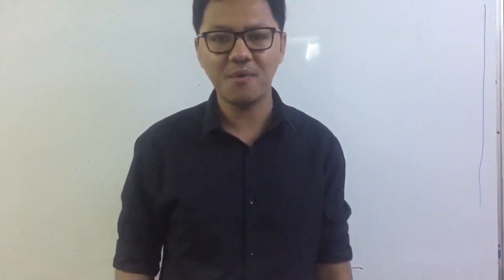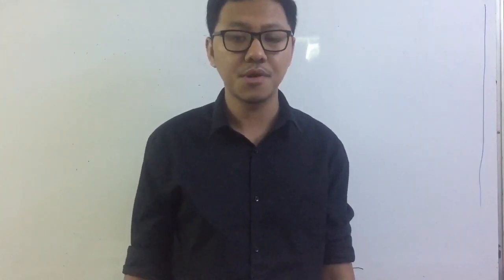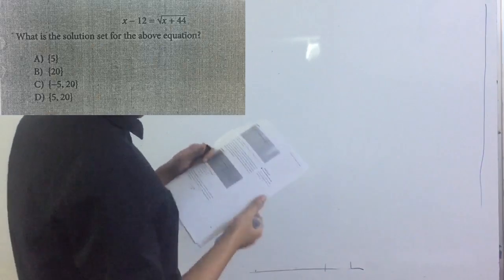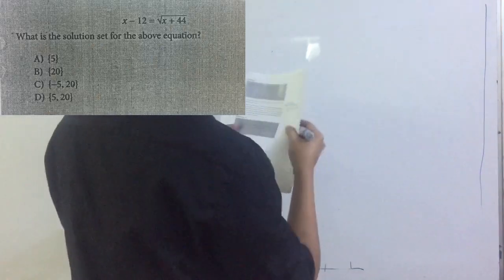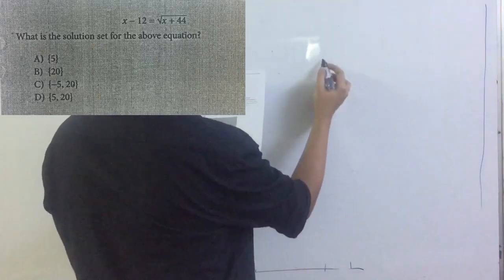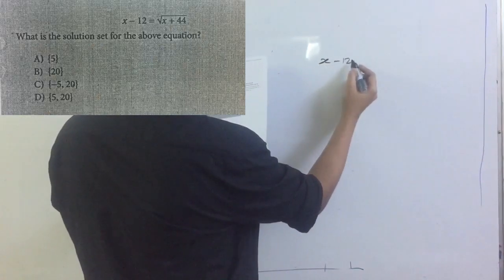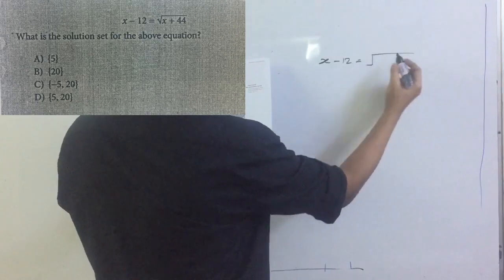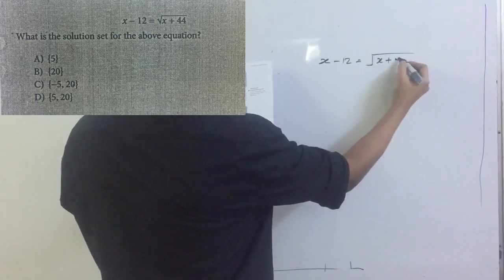The first tip I want to share is solving square root problems — square root equations. You always have to check for the extraneous solution. Let me show you one example. In this example, they give you a square root equation like this: x minus 12 is equal to the square root of x plus 24.